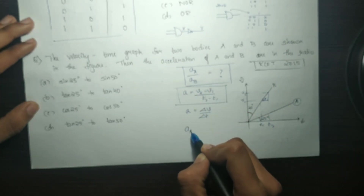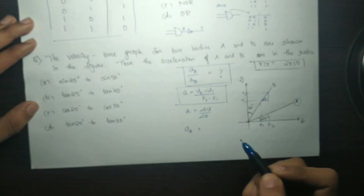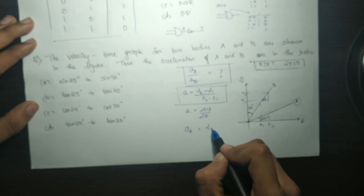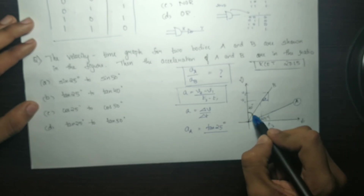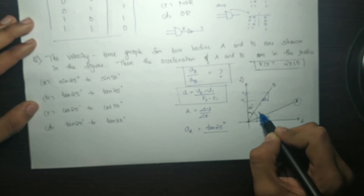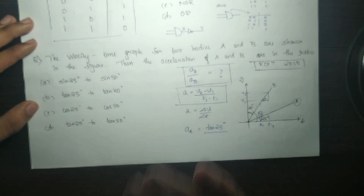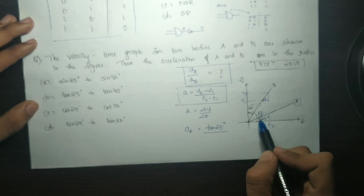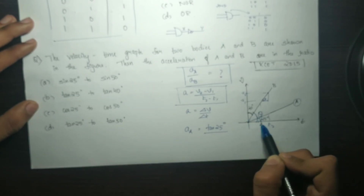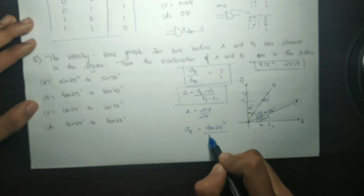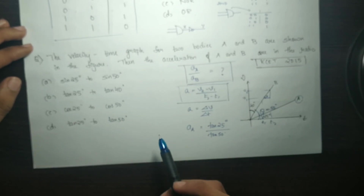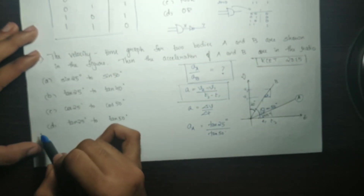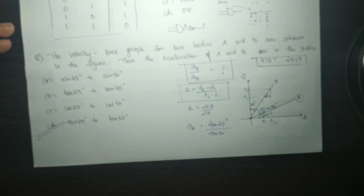The acceleration ratio AA to AB is tan 25 degrees to tan 50 degrees. For body B, the angle with the x-axis measured anticlockwise is 40 degrees, but since it's on the other side, theta equals 50 degrees. So we have tan 25 to tan 50 as the answer.